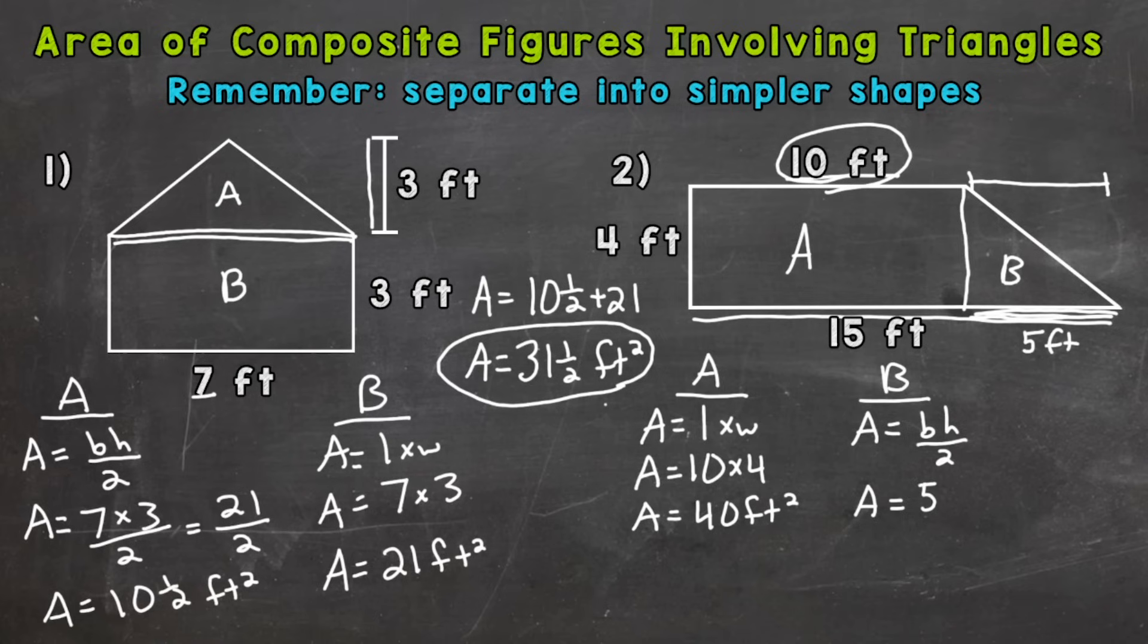So 5 times the height, which isn't labeled, but we can look over here at our 4. So the height is 4. And we divide by 2 since it's a triangle. That's going to give us 20 divided by 2. So 20 divided by 2 is going to give us a total area of 10 square feet.